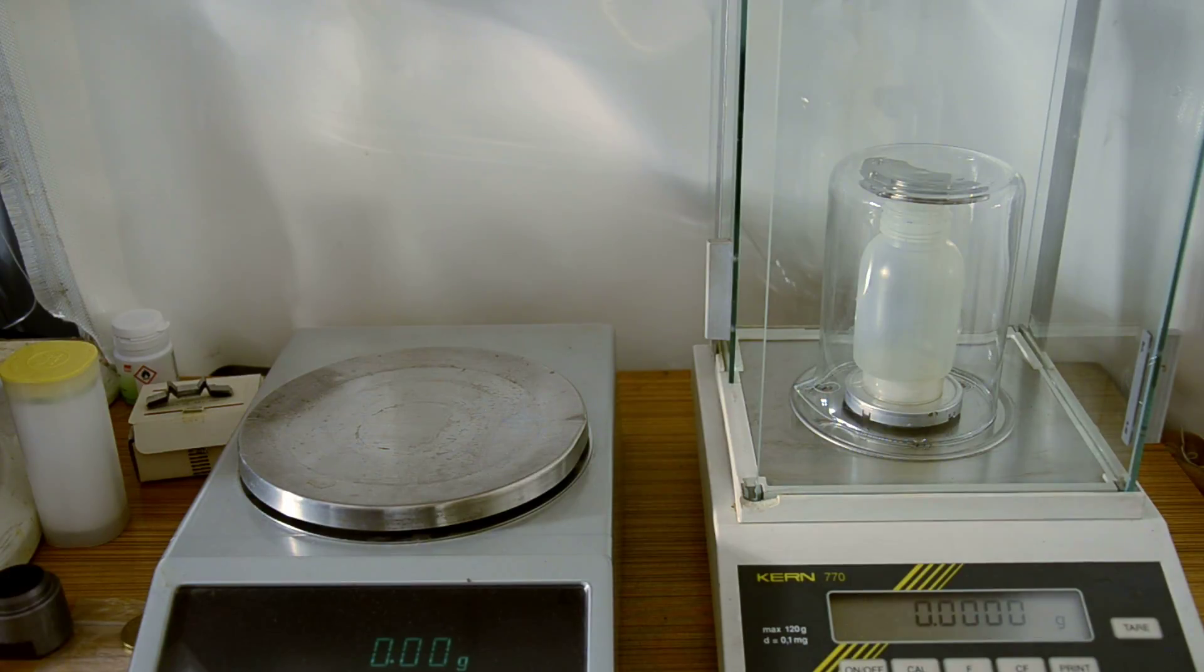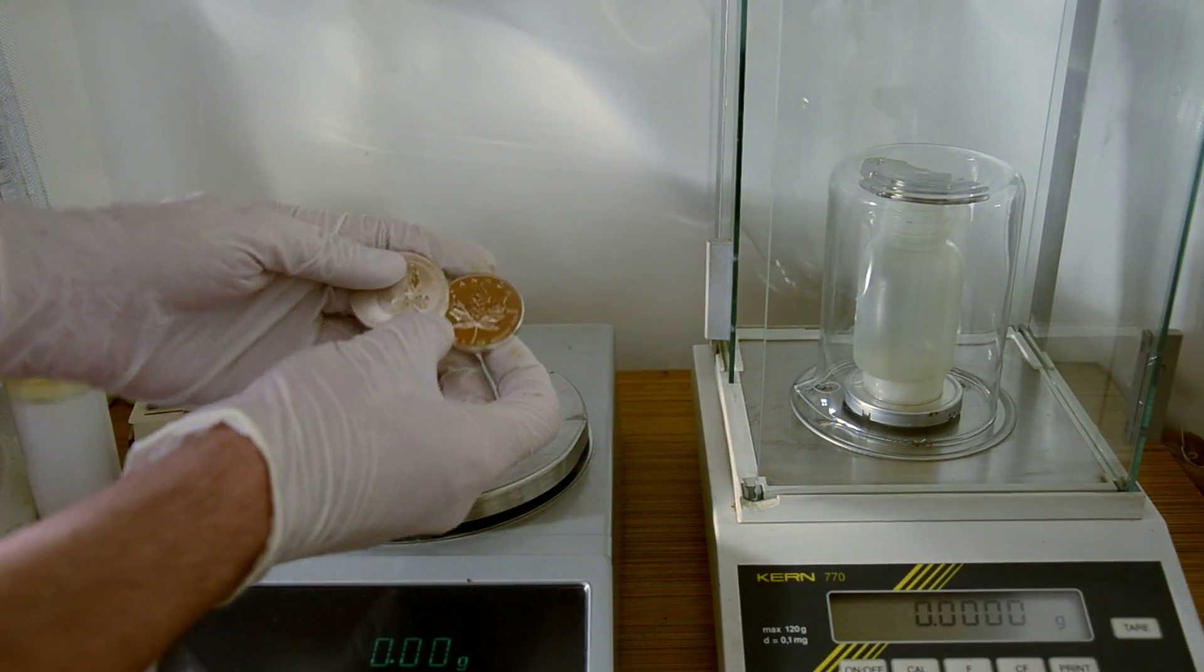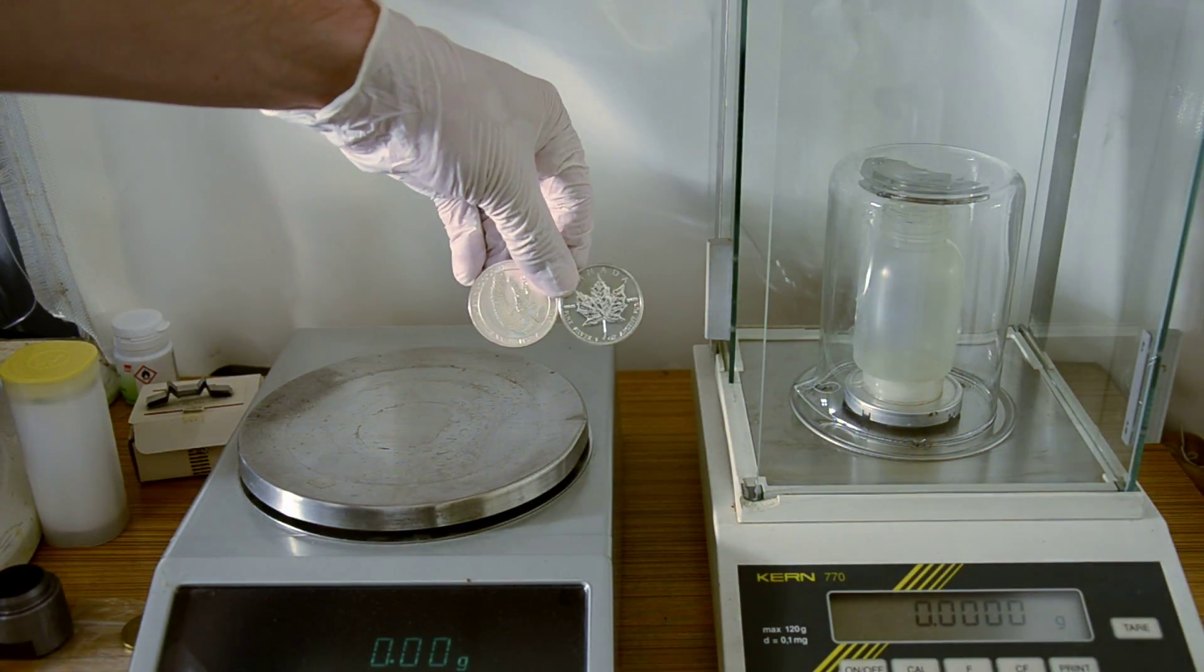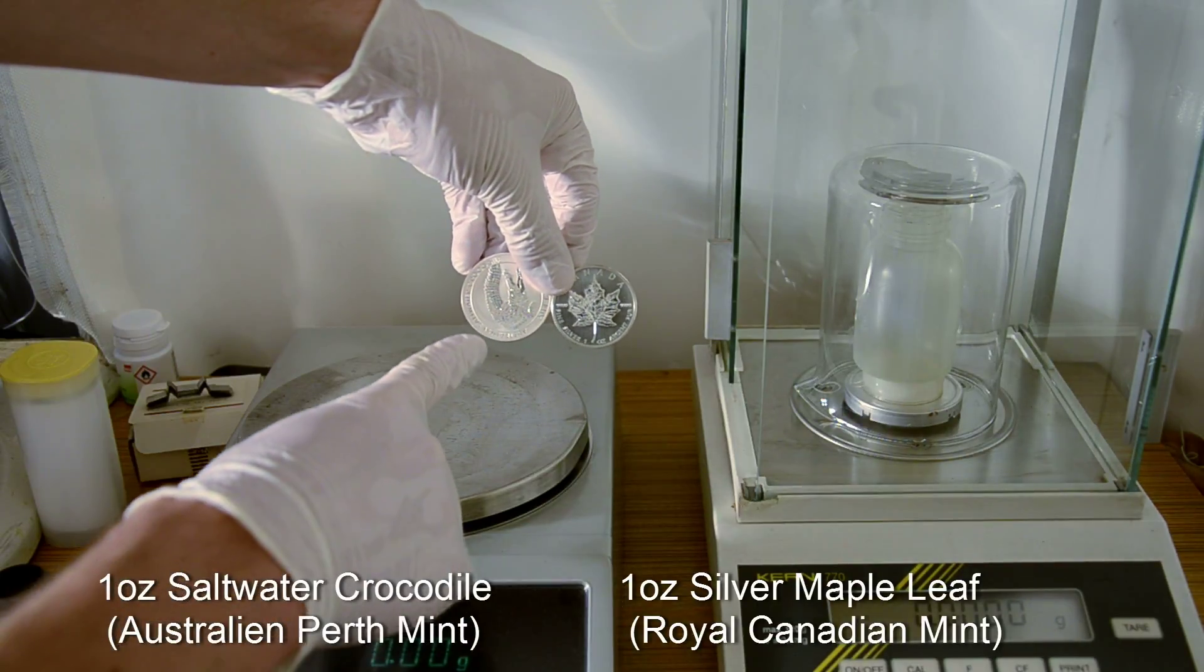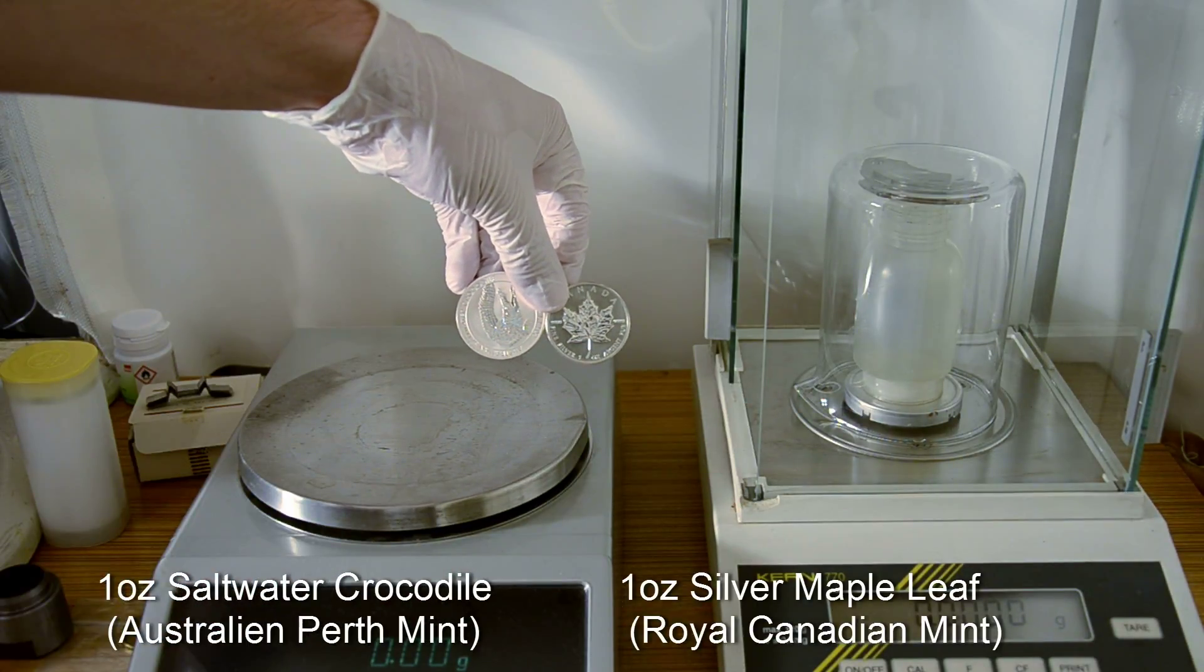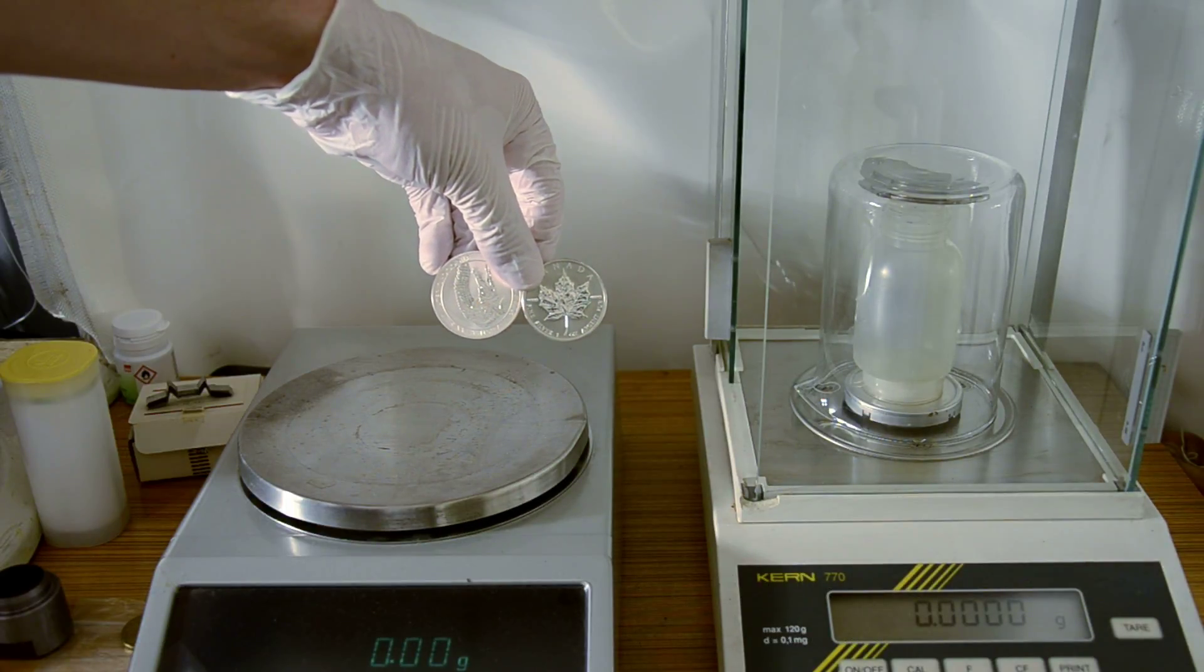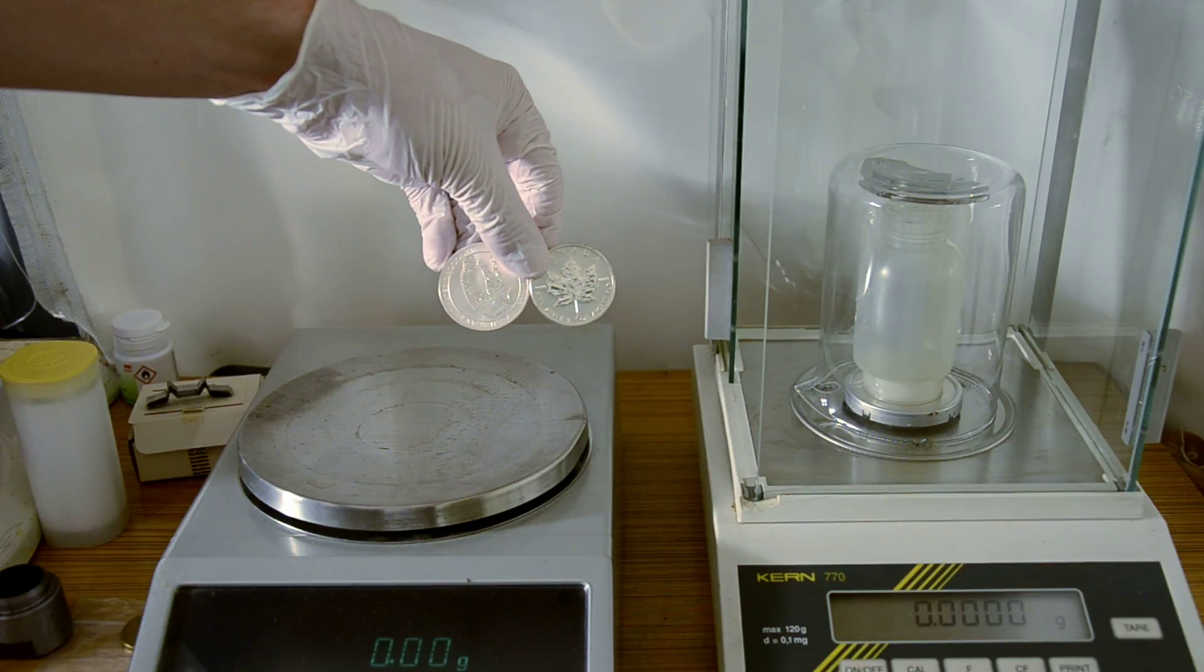So let's see the difference between two coins. We have here two different coins: one Maple Leaf and one Australian crocodile. This one is 99.99% pure silver, this only 99.9% silver.